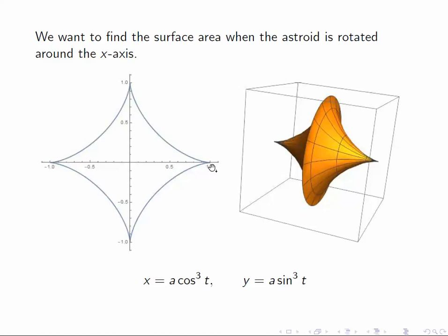Now we want to calculate the surface area of the solid of revolution we get when we rotate this asteroid around the x-axis. So rotating this around the x-axis gives us a shape like this, like a spinning top. And we want to find the surface area.